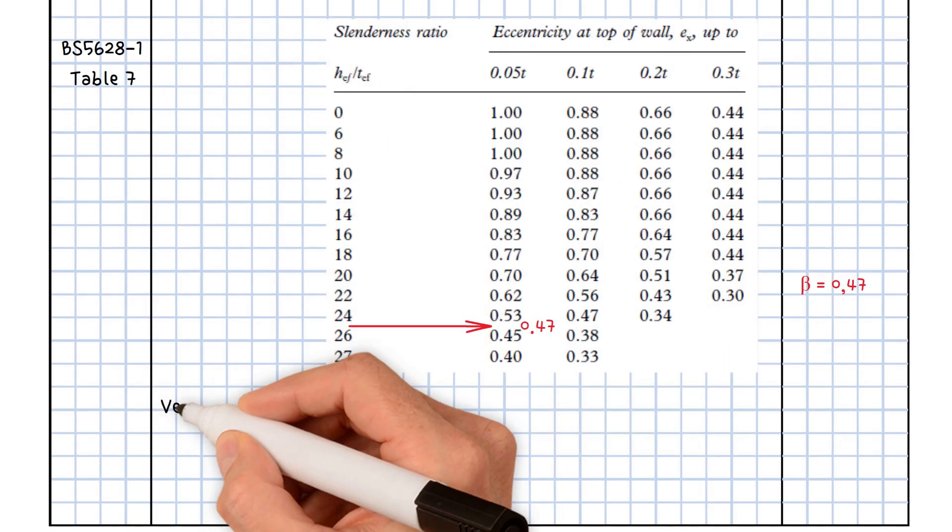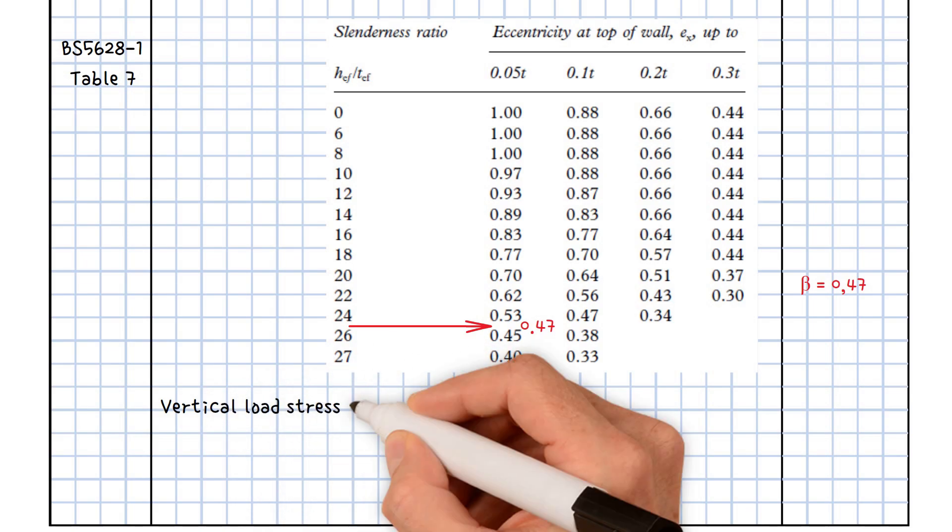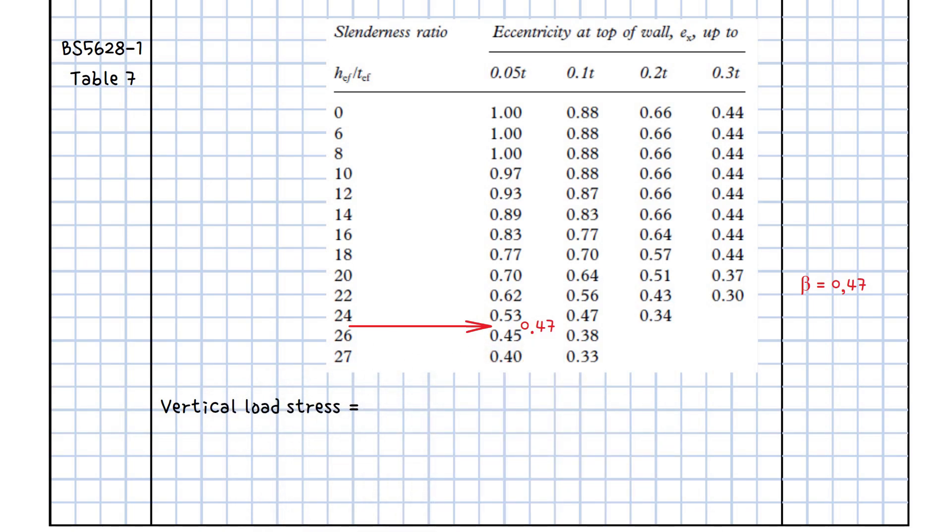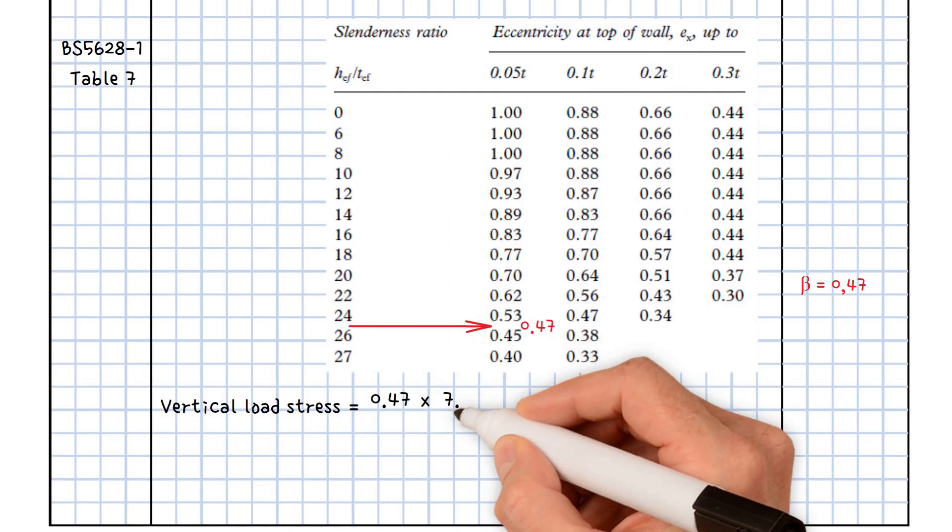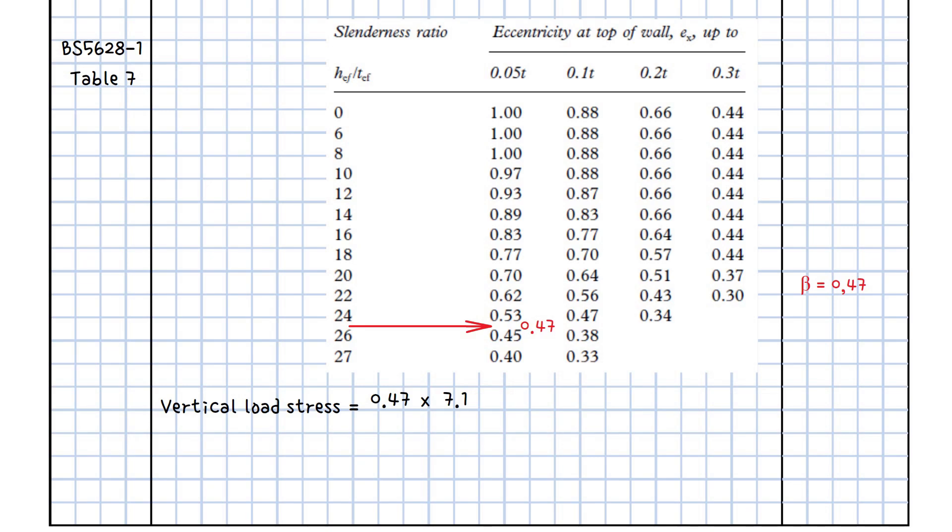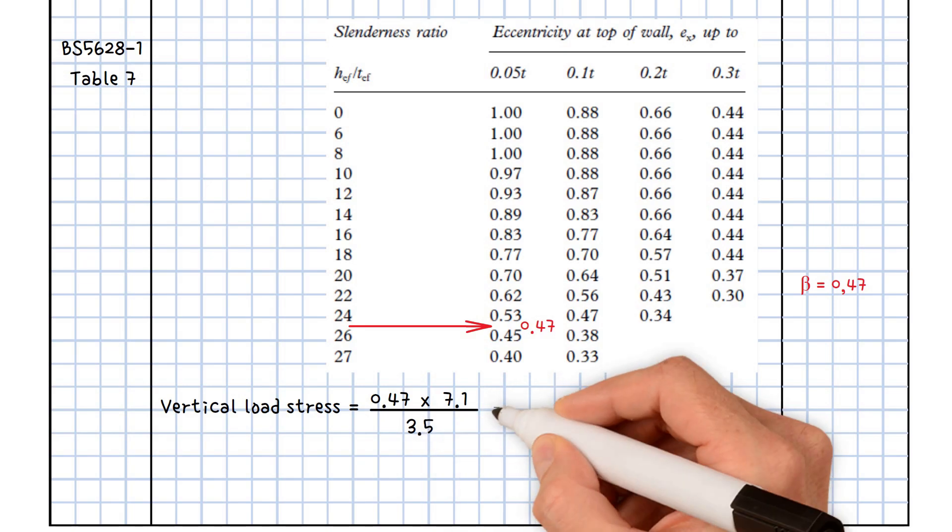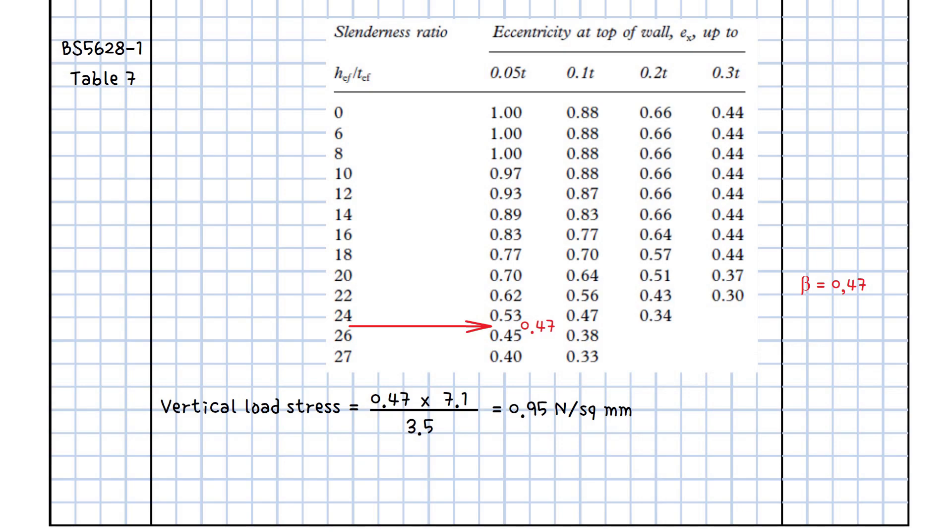Hence, allowable vertical load stress capacity equals capacity reduction factor beta 0.47, multiplied by characteristic compressive strength 7.1 newton per square millimeters, divided by partial safety factor 3.5. This results in a value of 0.95 newton per square millimeters.